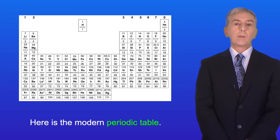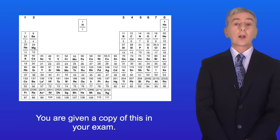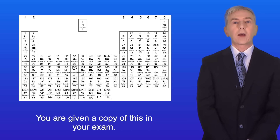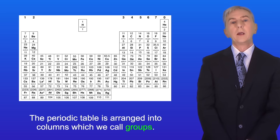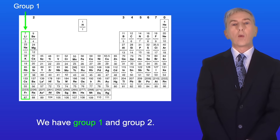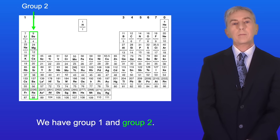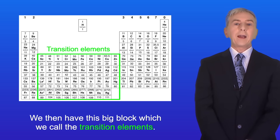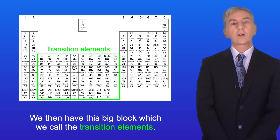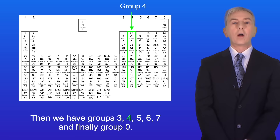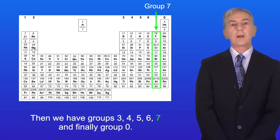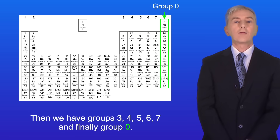Here is the modern periodic table, and you are given a copy of this in your exam. The periodic table is arranged into columns which we call groups. We have group 1 and group 2, then this big block which we call the transition elements, and then groups 3, 4, 5, 6, 7, and finally group 0.